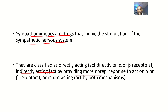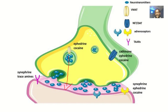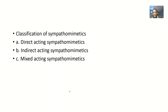Direct acting means that they are acting directly on the receptors. Indirect acting means they go and stimulate the secretion of the neurotransmitter — they are not acting directly on the receptor, but they are making it possible that the receptor has enough neurotransmitter. Then we have the mixed acting ones. This is all about neurotransmission: the neurotransmitter is released from a presynaptic nerve to the synaptic cleft, then from the synaptic cleft to the post-synaptic nerve.